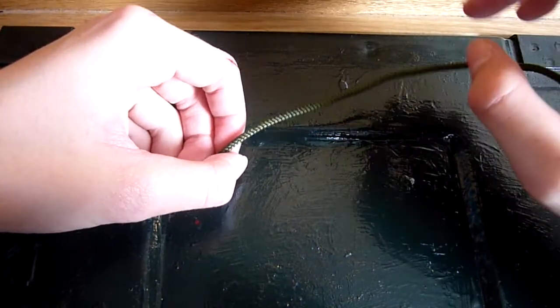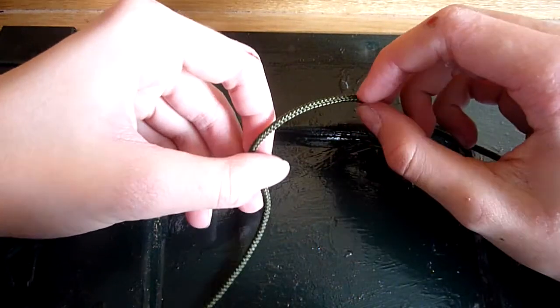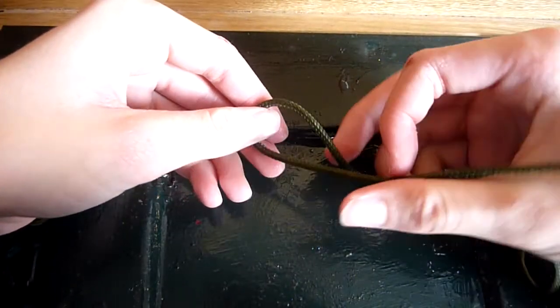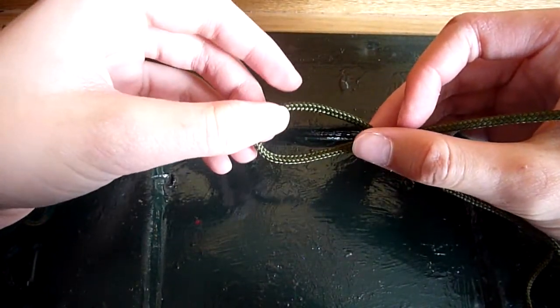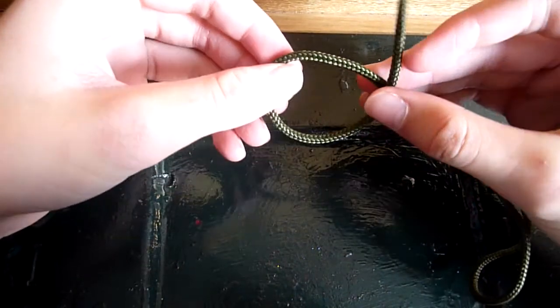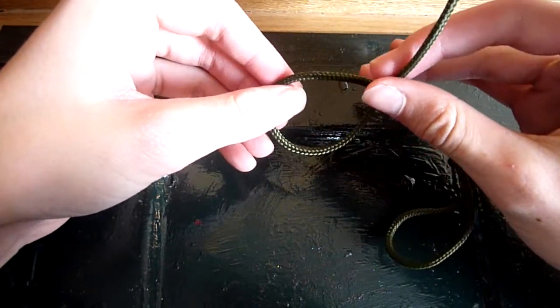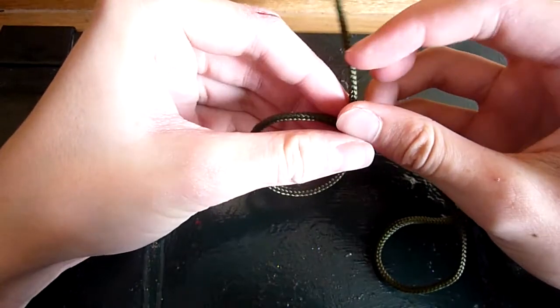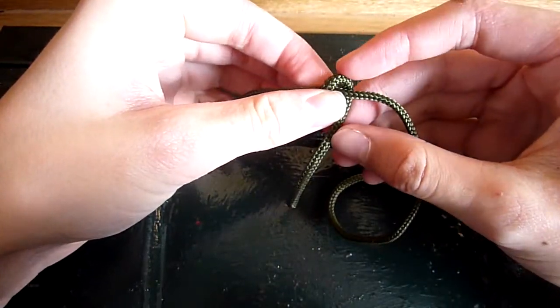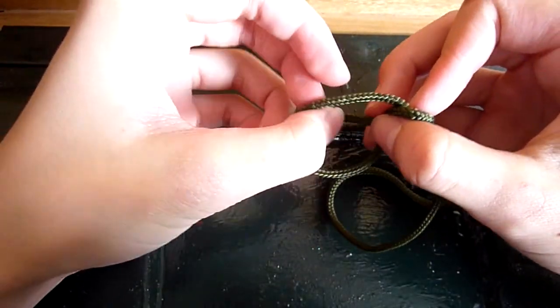So next up is the figure of eight. This is a more complex, not really complex, it's probably a better knot. So you just make a loop again, pass it over, under, and back through the loop.